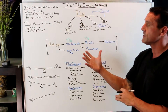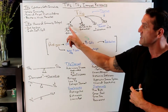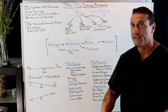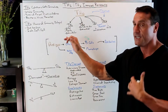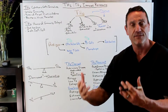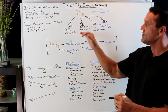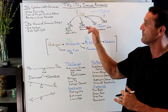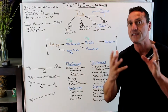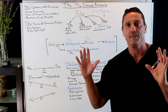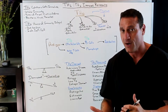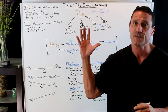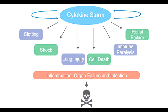The Th1 produces interferon and tumor necrosis factor alpha. These cells guard against intracellular bacteria, viruses, and parasites. The Th2 produces cytokines — the interleukins 4, 5, 6, 10, and 13 — and this is the delayed response. When your immune system takes a big hit and can't keep up, you get the condition called the cytokine storm. This is when you really feel sick because the immune response is either not working correctly or it's oversensitive.